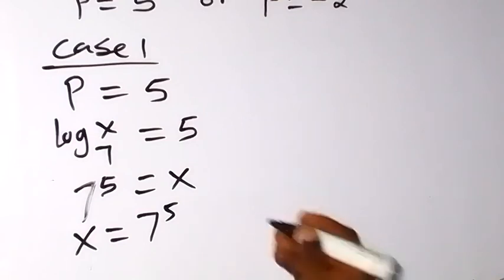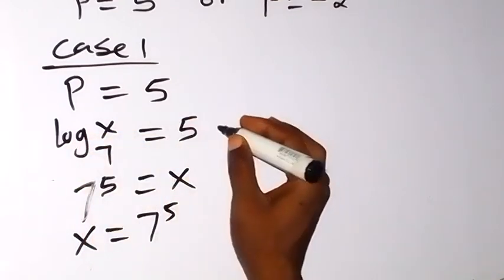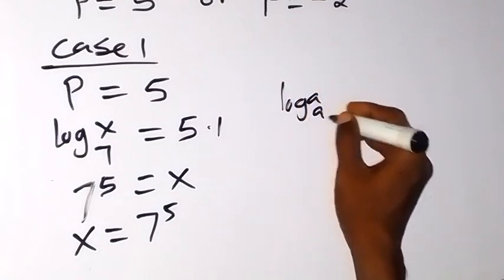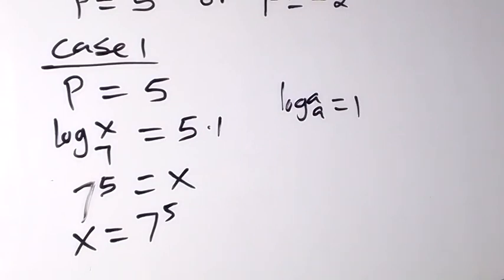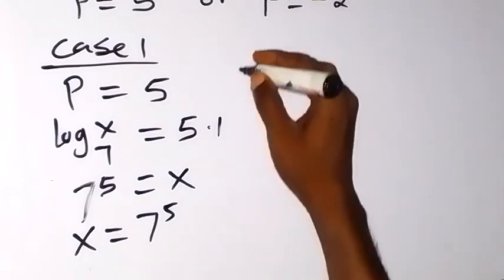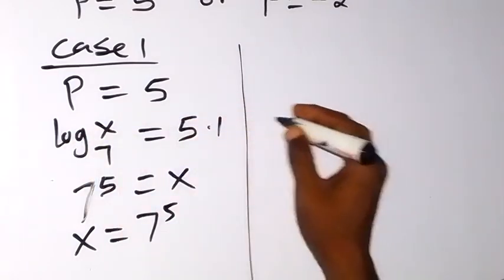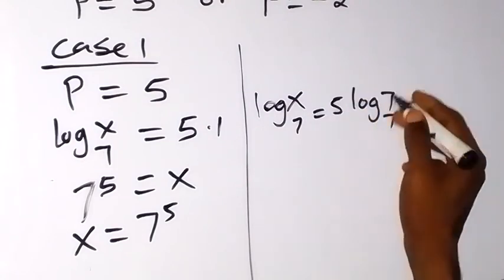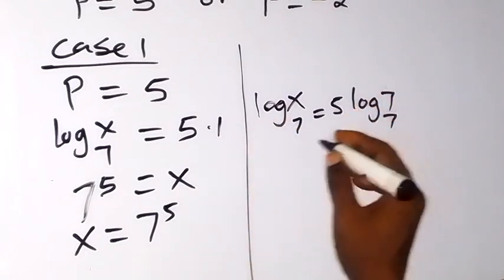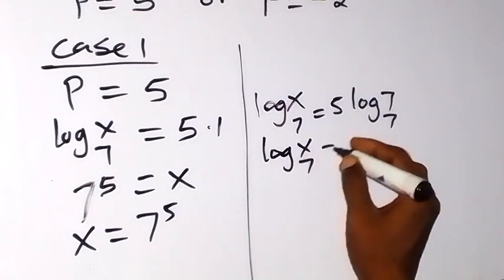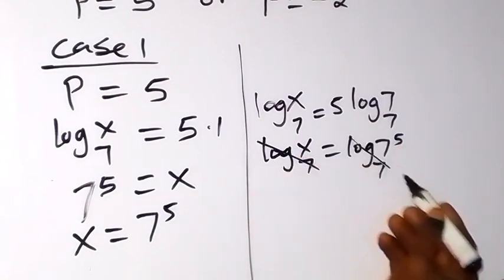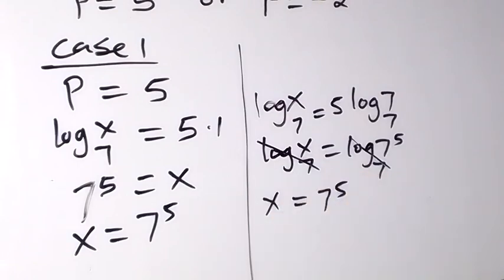Alternatively, since log(7 base 7) = 1, we can write 5 as 5·log(7 base 7), which equals log(7⁵ base 7). So log(x base 7) = log(7⁵ base 7), and since the bases match, x = 7⁵. These are the two ways of solving that equation.